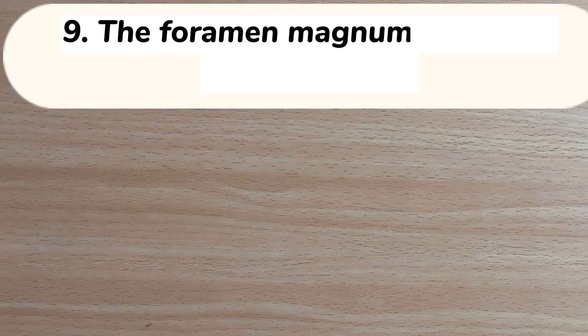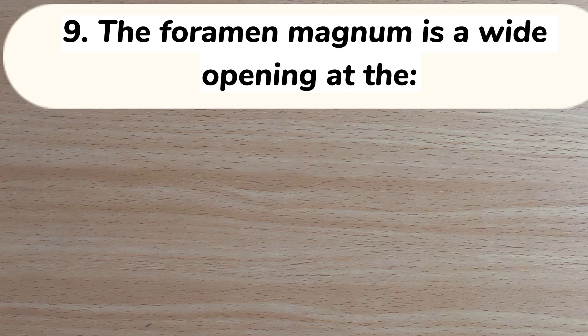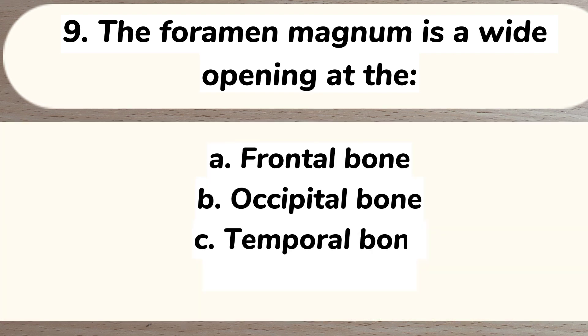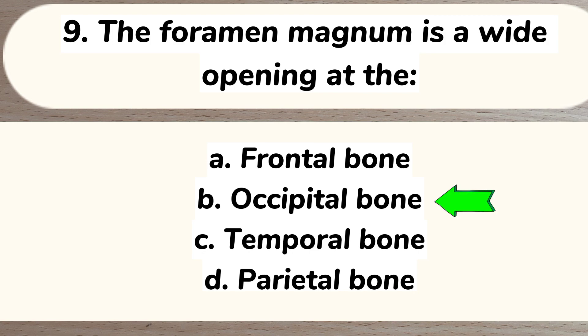Number 9. The foramen magnum is a wide opening at: A. Frontal bone, B. Occipital bone, C. Temporal bone, D. Parietal bone. Answer: B. Occipital bone.